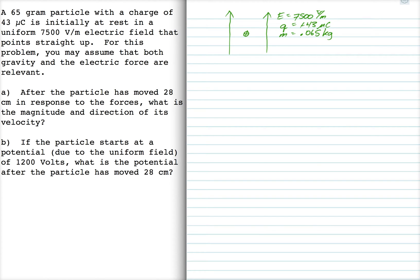So electric field and the gravitational field are both relevant here. Gravitational field of course is 9.8 meters per second squared and it points downward. So the electric force acting on this thing points up because positive charges want to follow electric field lines, and the gravitational force points down.